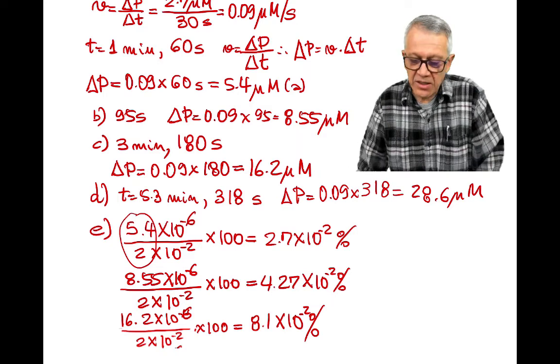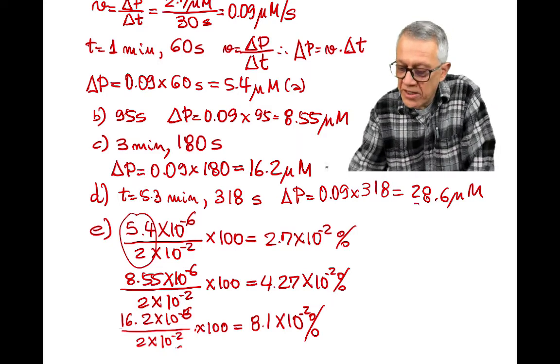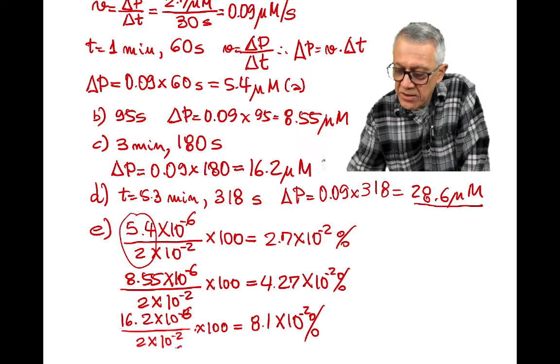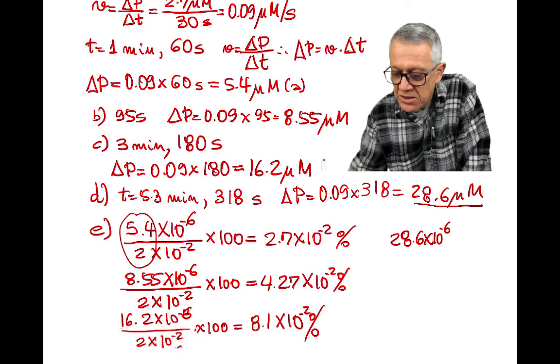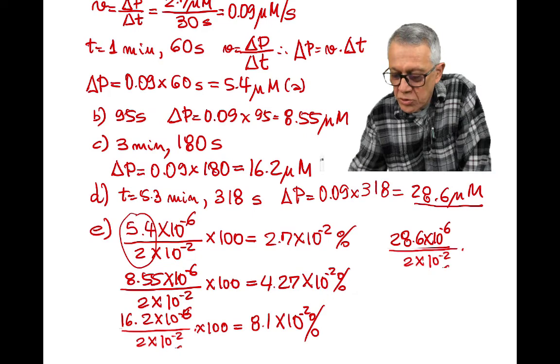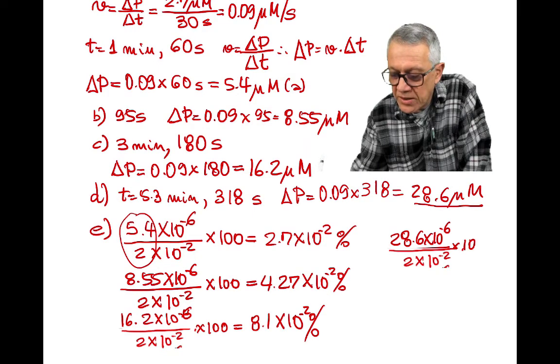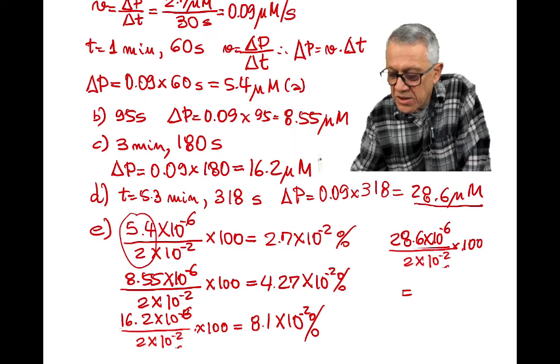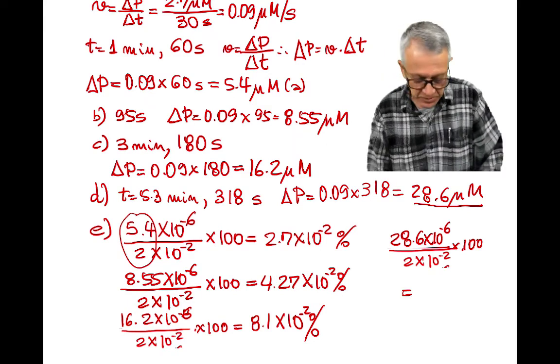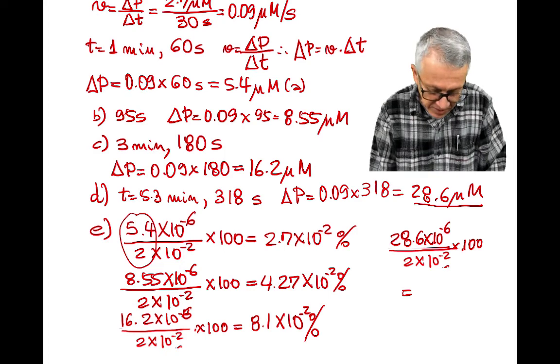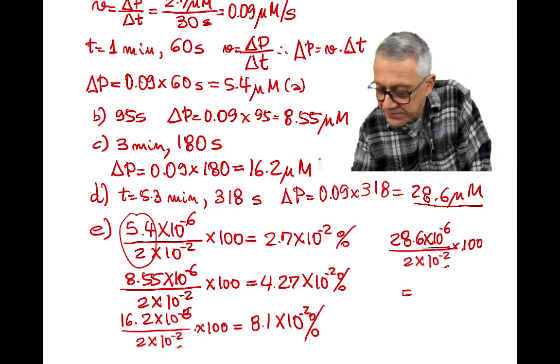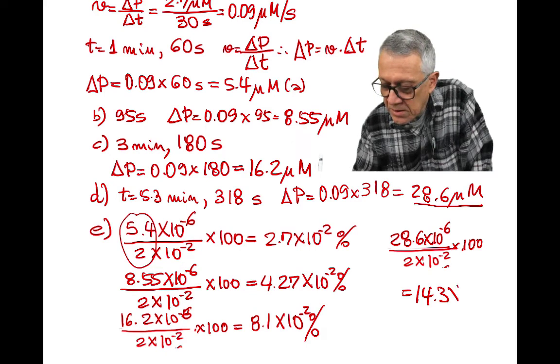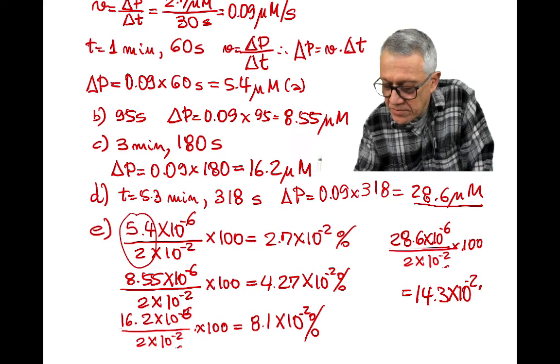And the last one gave us 28.6 micromolar. So 28.6 times 10 to minus 6 divided by 2 times 10 to the power of negative 2 times 100. This would give us 14.3 times 10 to minus 2 percent.